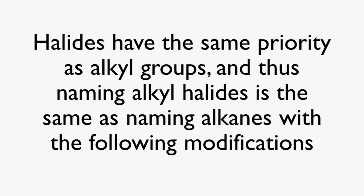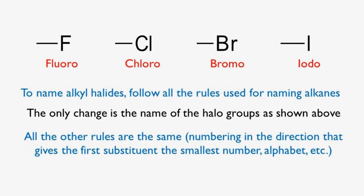To name alkyl halides, you name them exactly the same way as alkanes with the following modification — the only change is to use the name of the proper halide when it's a group. So for fluorine, you use the word fluoro. For chlorine, it's chloro. Bromine is bromo. Iodine is iodo. You're basically using the proper prefix with the -o ending instead of the -ine ending.